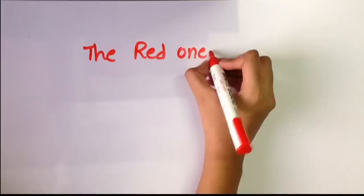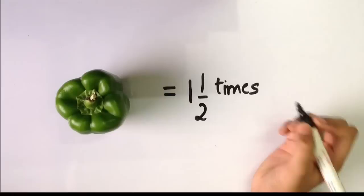The red ones have almost 11 times more beta-carotene than the green ones. Beta-carotene is very good for our skin and eyes. And the red one is also richer, 1.5 times more in vitamin C.